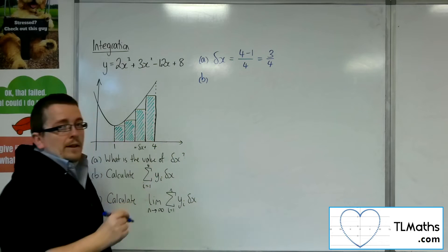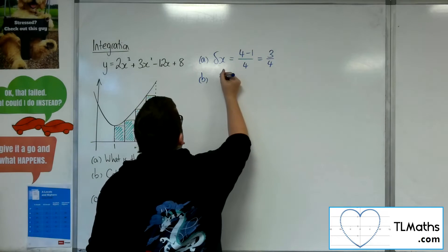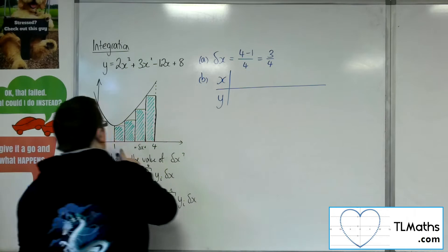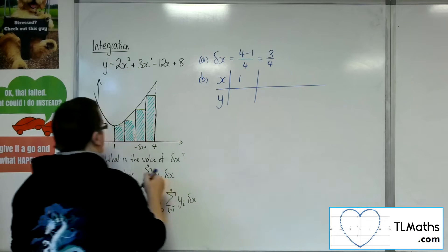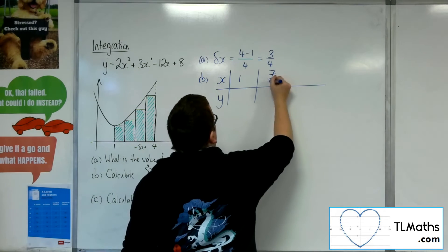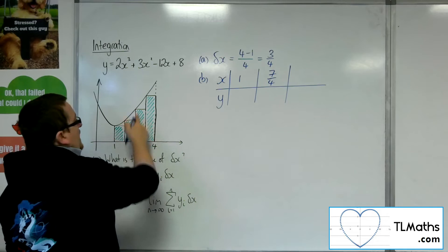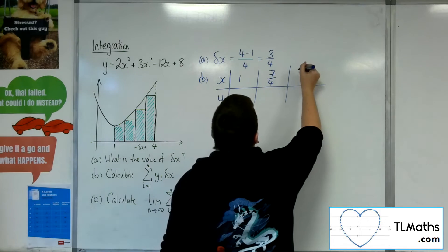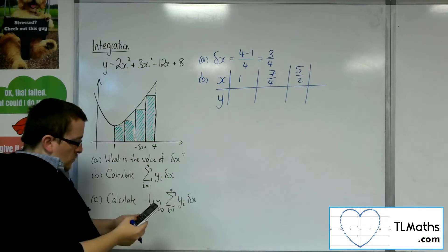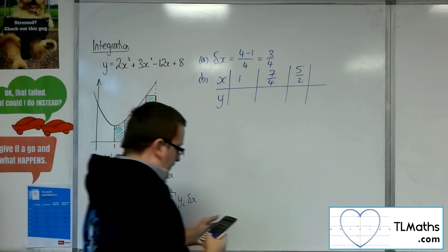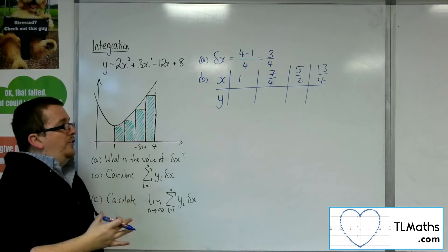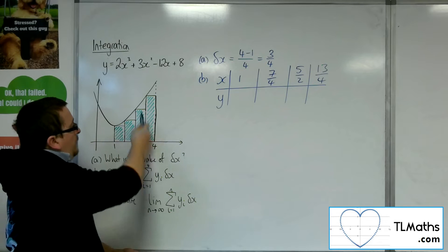It would probably be best to have a table with x values and y values. We're going to start at x equals 1. The next one along will be 1 and 3 quarters, so 7 quarters. Then the next one along will be another 3 quarters on, so that's 10 quarters or 5 halves. And then the next one along will be 5 halves plus 3 quarters, so 13 quarters. Those are the x coordinates of the bars.